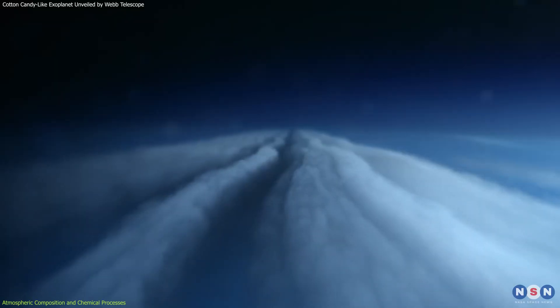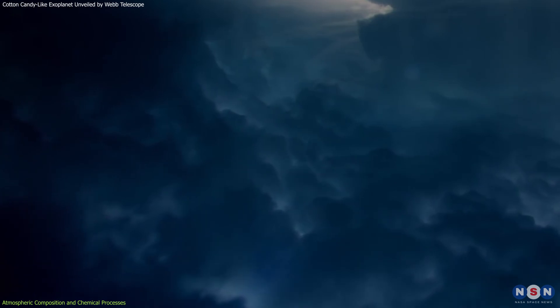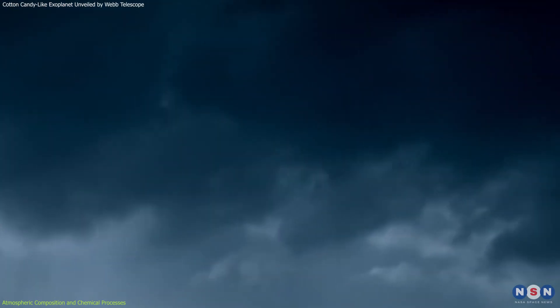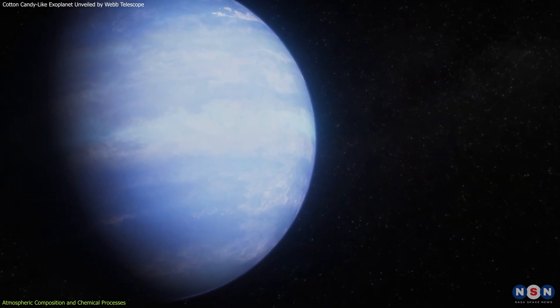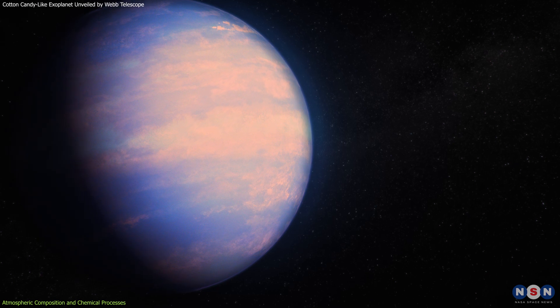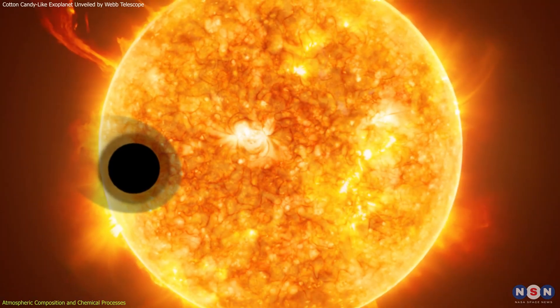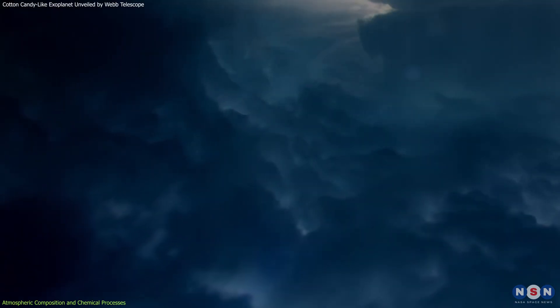The presence of silicate clouds, for instance, not only indicates temperatures and pressures different from those initially expected, but also suggests a cycle of condensation and evaporation that continually reshapes the atmosphere. The environmental conditions on this exoplanet, its proximity to its star, its temperature, and the light it receives, play crucial roles in driving these atmospheric processes.